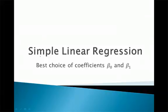Welcome back. In this video I will talk about one of the main proofs for the best choice of coefficients beta 0 and beta 1 in the simple linear regression. This is one of the basic and first proofs that you do if you started taking econometrics, so it's pretty important. I hope this will be useful.